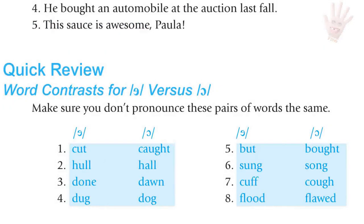Quick review — vowel contrasts for Uh and Aw: cut/caught, hull/hall, done/dawn, dough/dog, but/bought, sung/song, cuff/cough, flood/flawed.